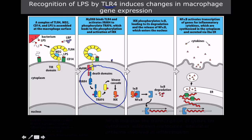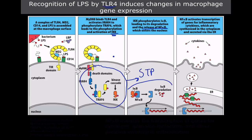This entire sequence is the signal transduction pathway. The key thing to know is that we have activation of IKK. IKK is a kinase enzyme — kinase enzymes move phosphate groups from one position to another. IKK phosphorylates IκB, which frees up NF-κB. NF-κB is a transcription factor for cytokines, so we're producing large amounts of cytokines through this signal transduction pathway.